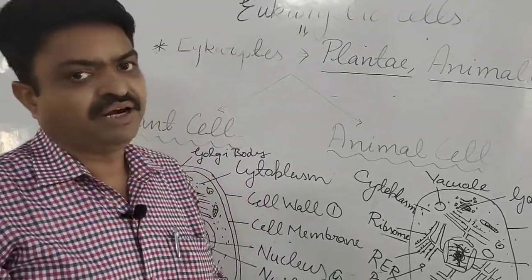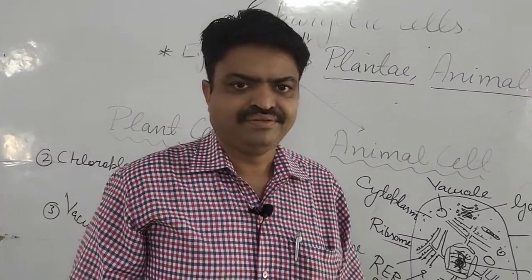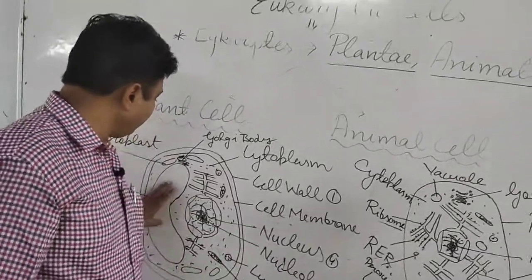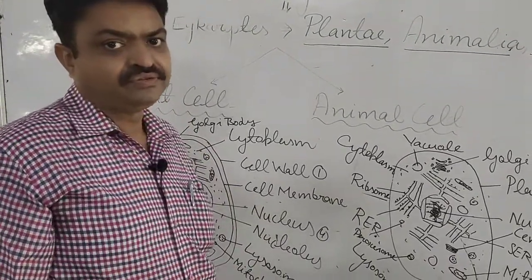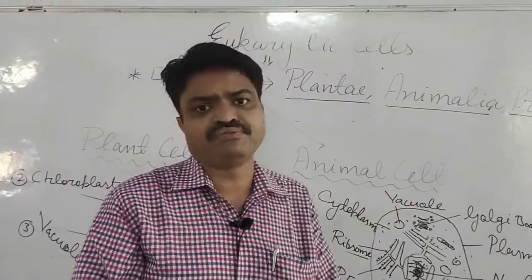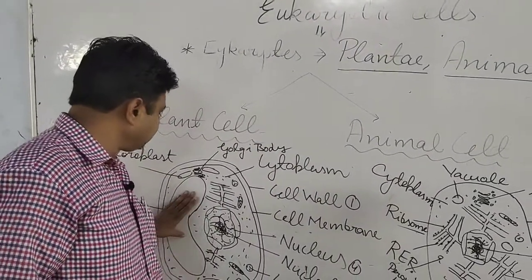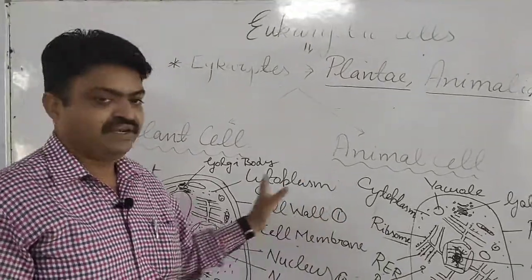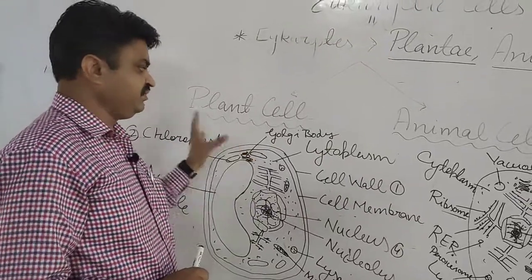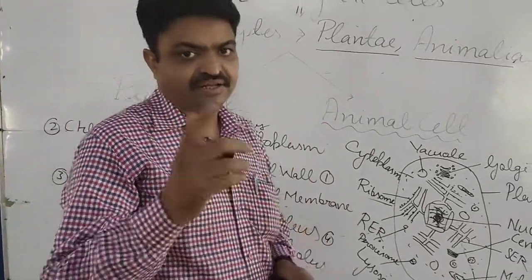Why do plant cells have large-size vacuoles? Plant cells have large vacuoles because they don't prepare food at night. To use stored food at night, and when they don't get proper sunlight, they utilize stored food from the vacuole. That's why the plant cell has a larger vacuole than the animal cell. These are the main differences to learn, along with the labeled diagrams in your book.